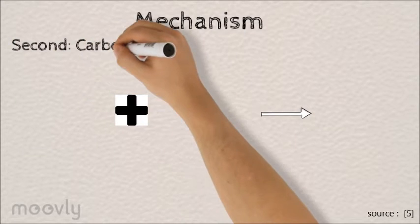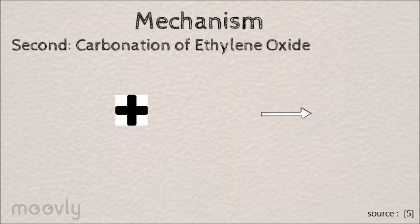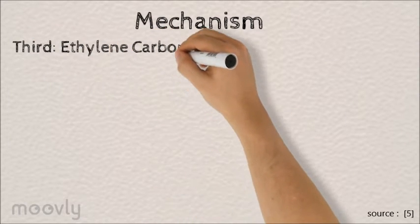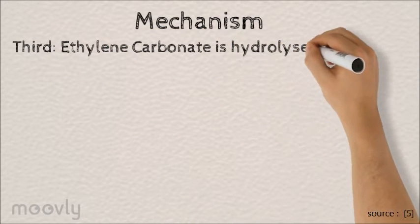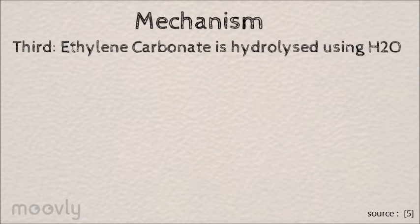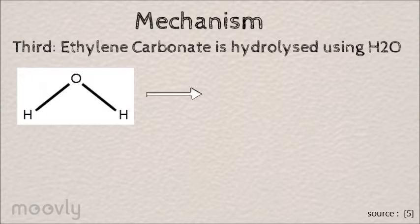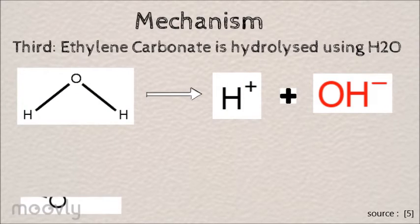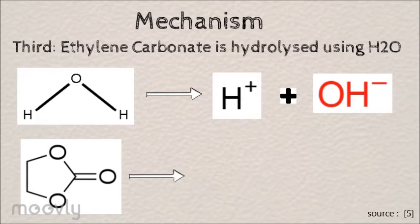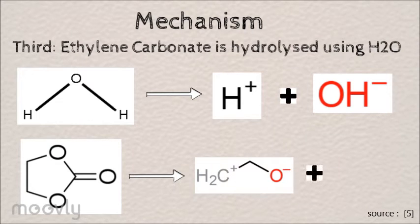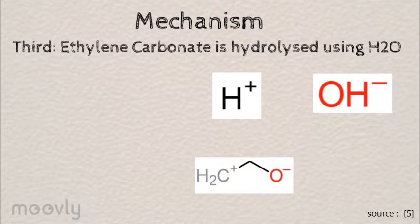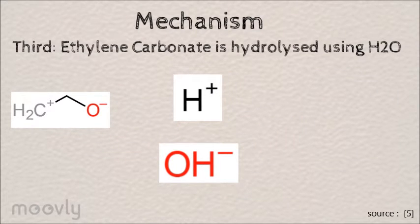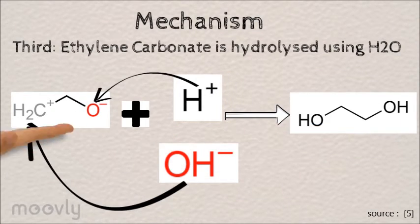Next is the carbonation of ethylene oxide using carbon dioxide. Lastly, the ethylene carbonate is hydrolyzed using water. Water breaks its bond to form a hydrogen ion and a hydroxide ion, while the ethylene carbonate also breaks its bond to form a zwitterion and carbon dioxide. Then the hydroxide ion and hydrogen ion bond with the zwitterion to form monoethylene glycol.